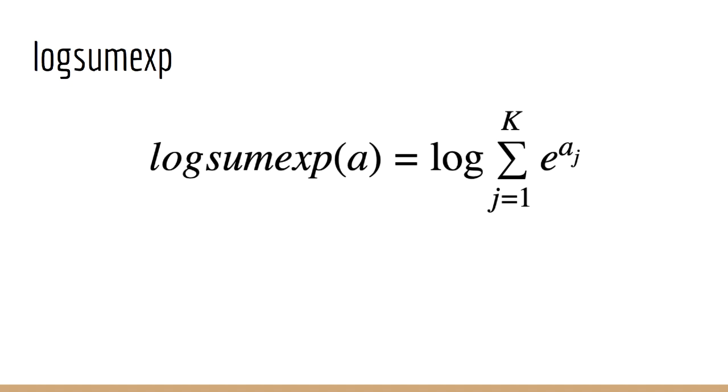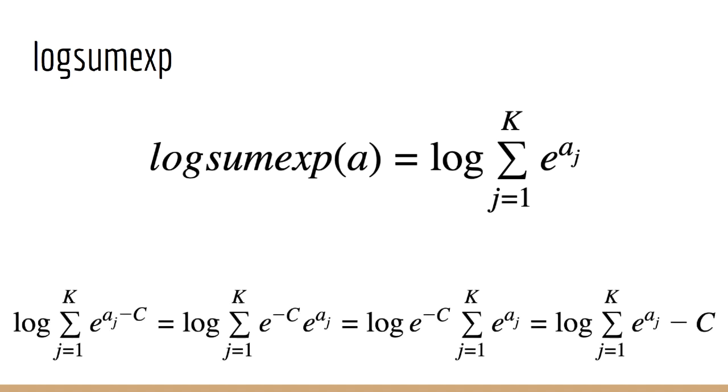So what happens if we take some constant c and subtract it from the activations? Well, we can use the product of exponentials rule to separate the c term and then bring that outside the sum since it's constant. Then we can use the log of products rule to separate the c term again, and we see that all we end up doing is subtracting c.